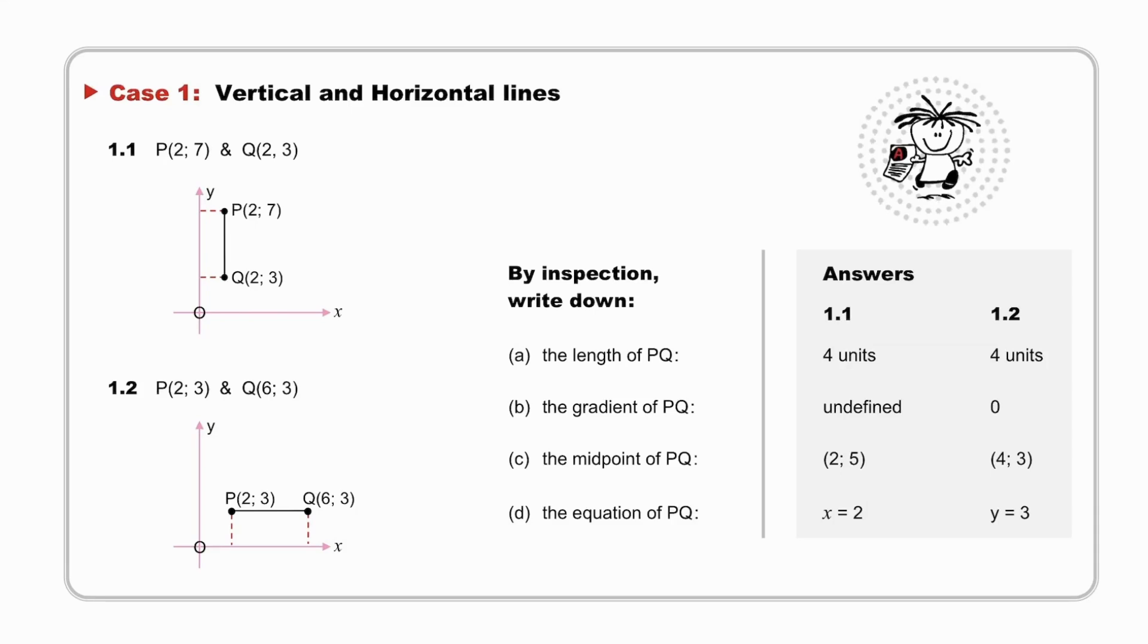The midpoint of PQ, we realize the midpoint of PQ would have the same x-coordinate as P and Q, therefore 2, but the y-coordinate will be the value halfway between 3 and 7, so it will be the point (2, 5). The midpoint of PQ, in the second case, will have the same y-coordinate, namely 3, but the x-coordinate will be halfway between 2 and 6, and therefore the midpoint will be the point (4, 3). The equation of this line is x = 2, because x = 2 is a fact true for every single point along that line, and the equation of this line is y = 3, because that is true for every single point on that line.